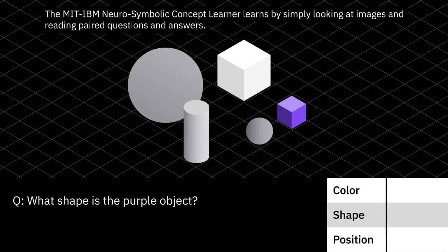The MIT IBM Neurosymbolic Concept Learner learns by simply looking at images and reading paired questions and answers.